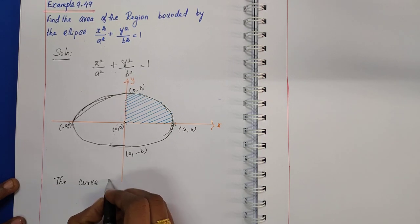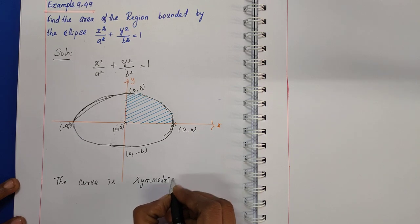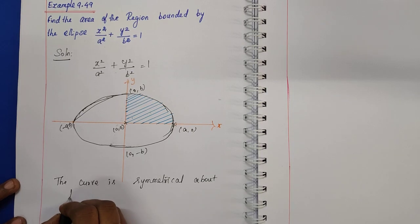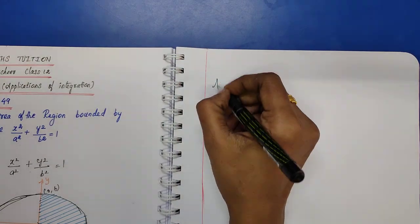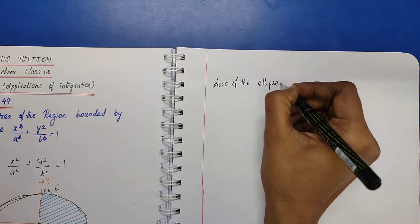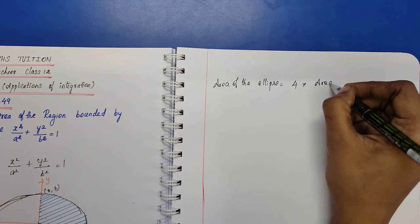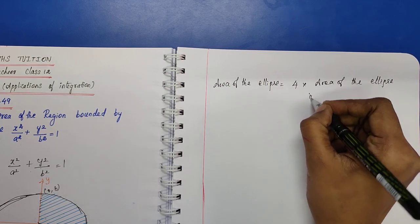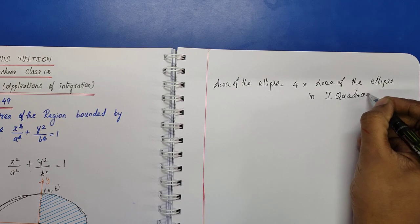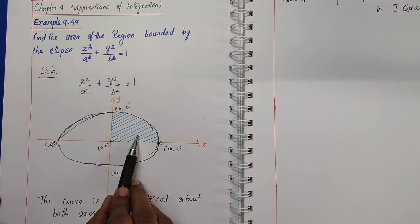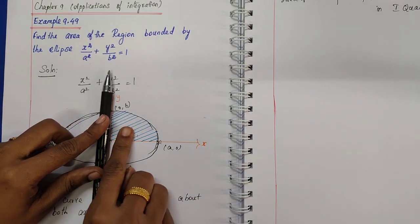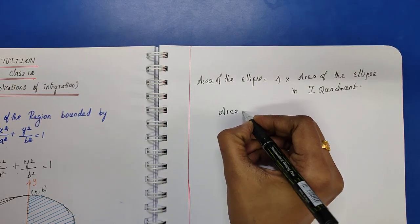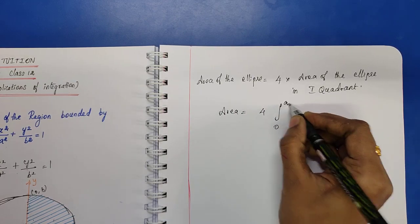The curve is symmetrical about both axes. Therefore, the area of the ellipse is equal to 4 times the area of the ellipse in the first quadrant. Using the formula for the area above the x-axis and to the right of the y-axis: Area = 4 × ∫₀ᵃ y dx.